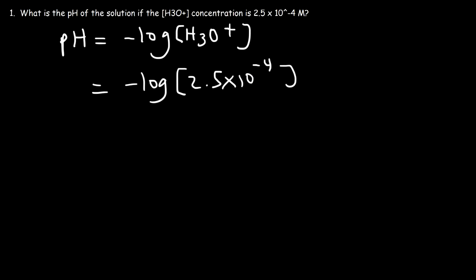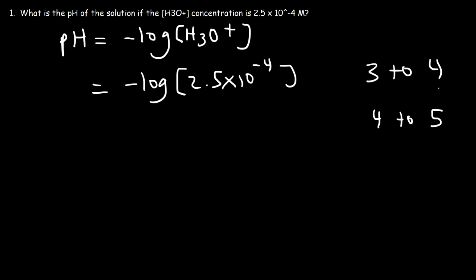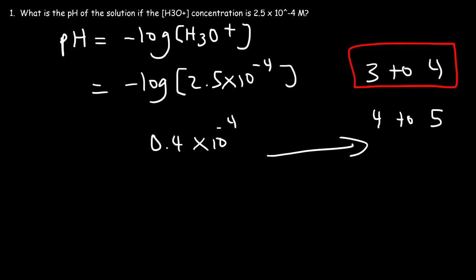The pH is going to be close to 4. Do you think it's going to be between 3 and 4, or somewhere between 4 and 5? If this number is greater than 1, choose the lower region. If it's less than 1, say 0.4 times 10 to the minus 4, I would choose the higher region. So we know it's somewhere between 3 and 4. If we type in negative log of 2.5 times 10 to the minus 4, this gives us a pH value of 3.6, which is indeed between 3 and 4.